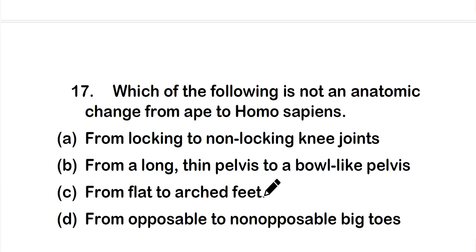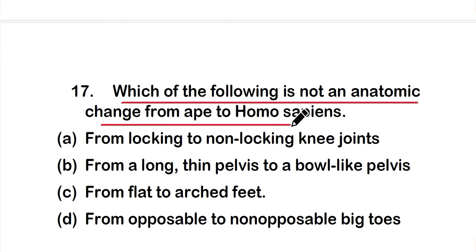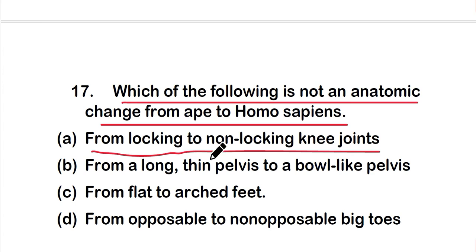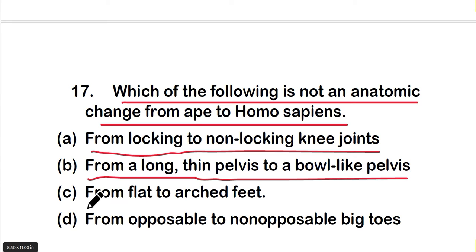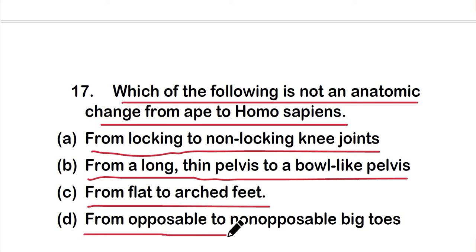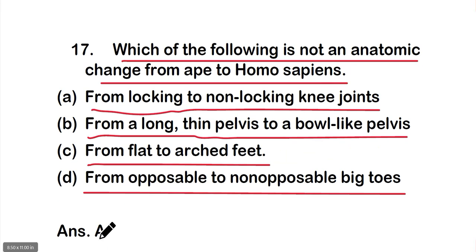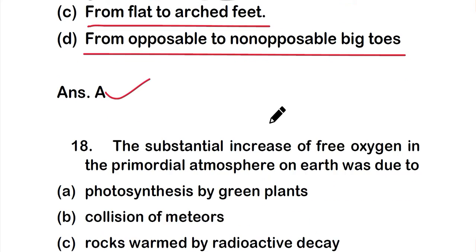Question 17: Which of the following is NOT an anatomical change from ape to Homo sapiens? Option A: from locking to non-locking knee joints, option B: from a long thin pelvis to a bowl-like pelvis, option C: from flat to arched feet, or option D: from opposable to non-opposable big toes. The correct answer is option A — the change from locking to non-locking knee joints is not an anatomical change from ape to Homo sapiens.